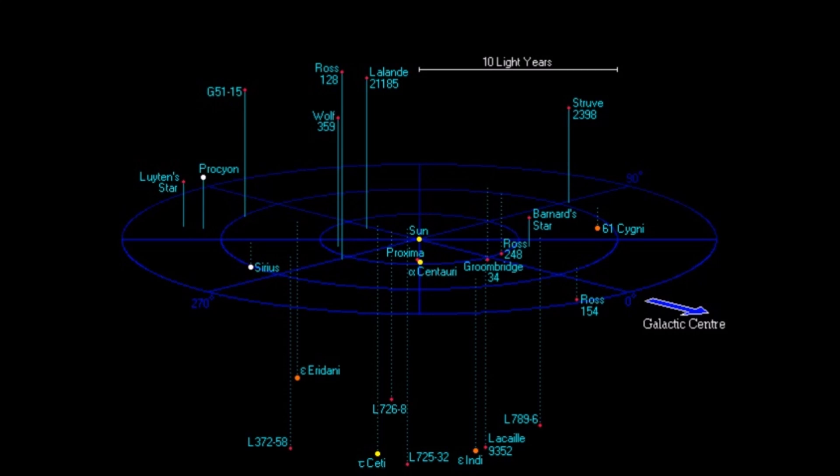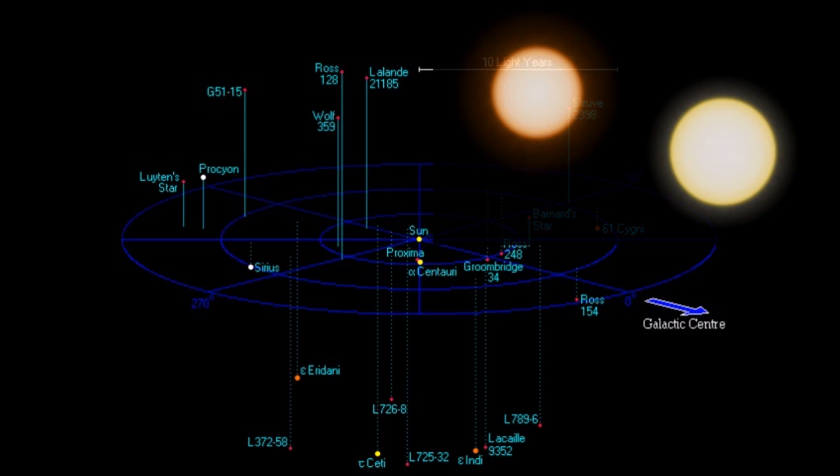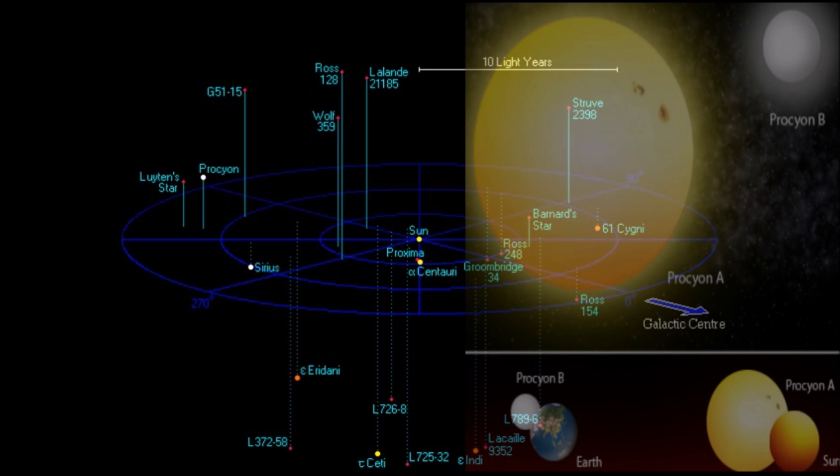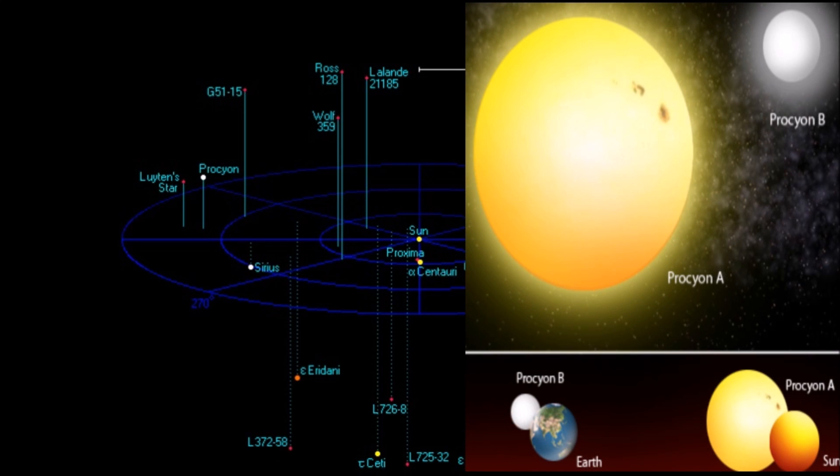We move out. Next main sequence star is Epsilon Eridani, 10.5 light years away, and then we have Procyon, 11.4 light years away. As you can see on this star disk, we are moving outwards.